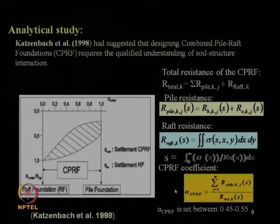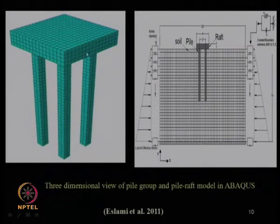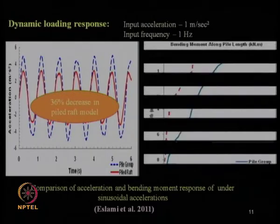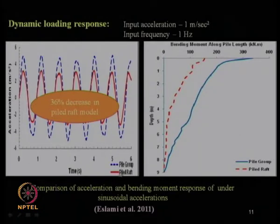The CPRF coefficient is the key design parameter, ideally set at 0.5, meaning the pile and raft share equal load from the superstructure. The alpha CPRF coefficient is generally set between 0.45 to 0.55 for design purposes. Research by Eslami et al. in 2011 using Abaqus showed that under dynamic loading with input acceleration of 1 m/s² at 1 Hz, there is a 36% decrease in acceleration in CPRF compared to pile group.